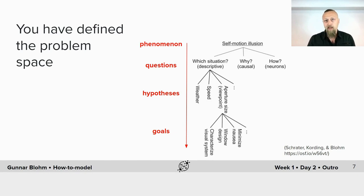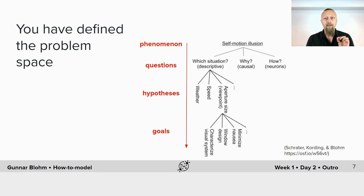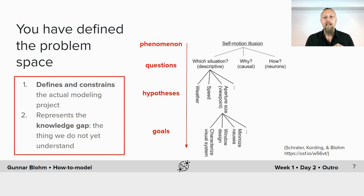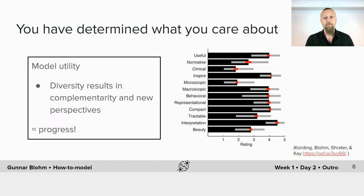Each of those hypotheses would be potentially meaningful for a series of different goals. For example, examining window size could be interesting in the quest to reduce nausea, or maybe you're interested in window design, or what processing characteristics in visual cortex lead to this illusion. Those are all reasonable questions, hypotheses, and goals. But every path taken — every combination of these — would lead to a different model. Precisely defining your problem space thus defines and constrains the actual modeling project and helps ensure success. It is crucial to specify the problem space because it represents the knowledge gap we would like to fill — the thing we do not understand yet and that we would like our model to shine light on.